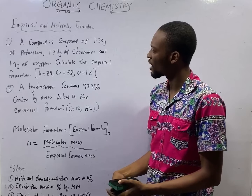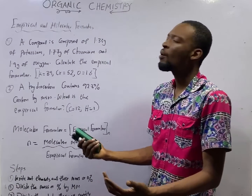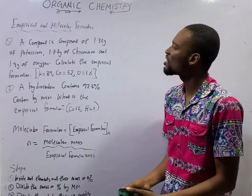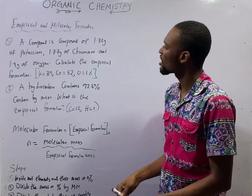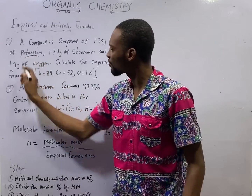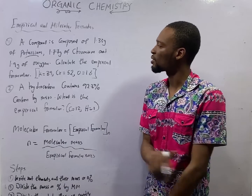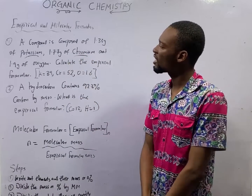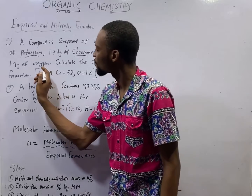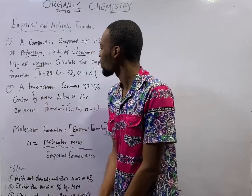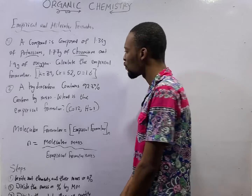Let's swing into action. A compound is composed of 1.33 grams of potassium, 1.77 grams of chromium, and 1.90 grams of oxygen. Calculate the empirical formula.